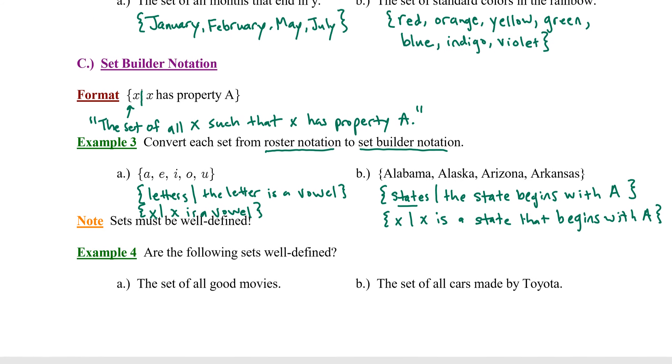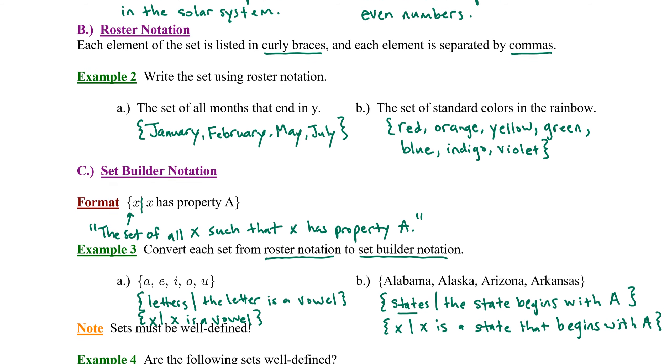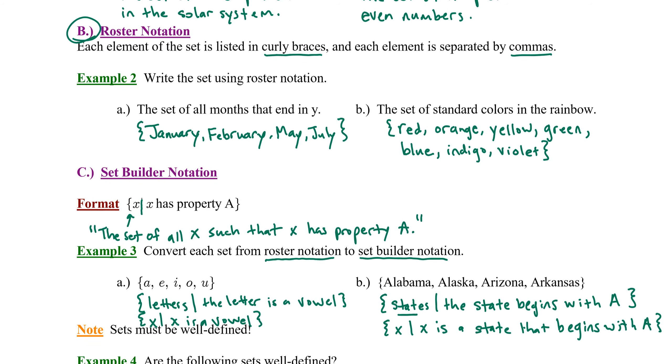So those two types of notation are the main categories of notation that we'll be working with in this section. Again, they are roster notation where we list each element within curly braces separated by commas, and set builder notation where we follow this particular format and describe the elements of the set in some sort of description.